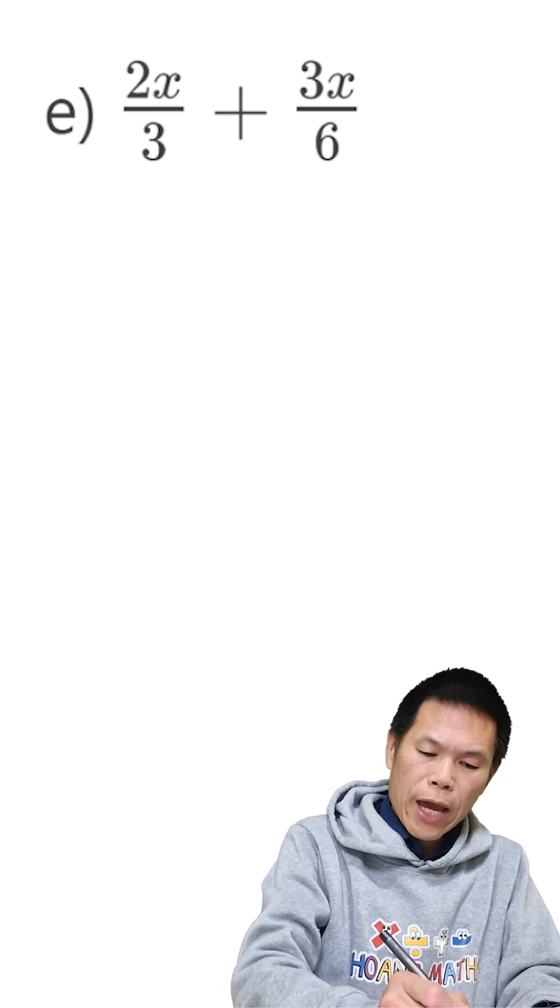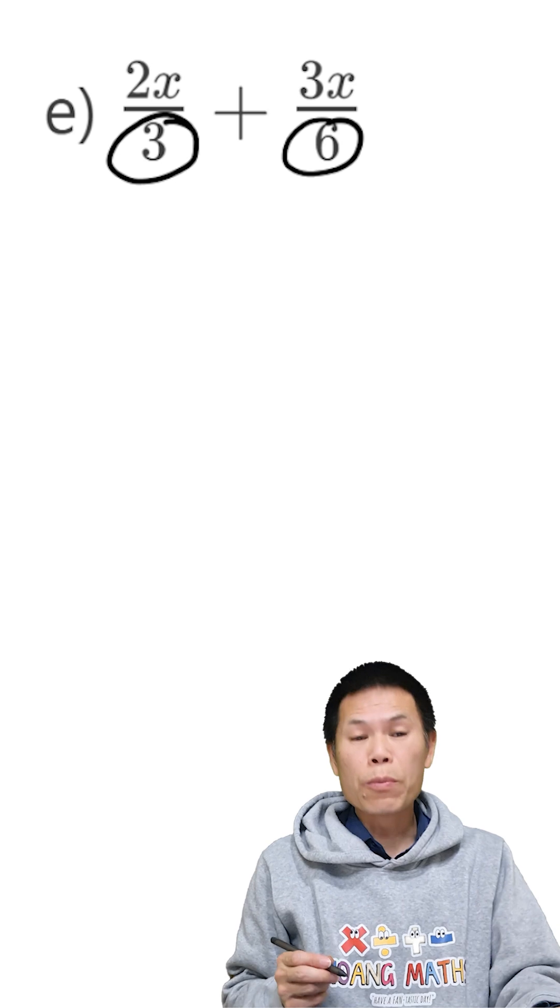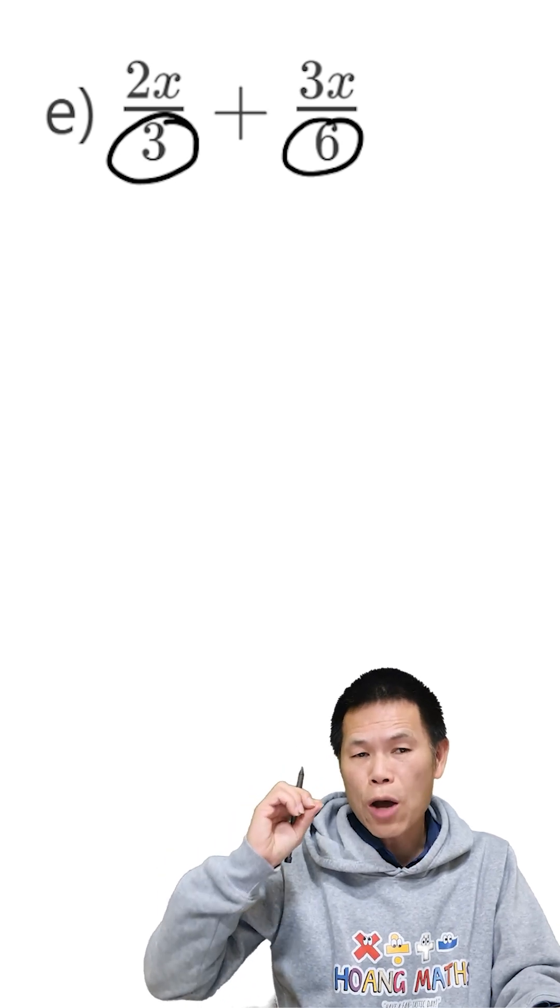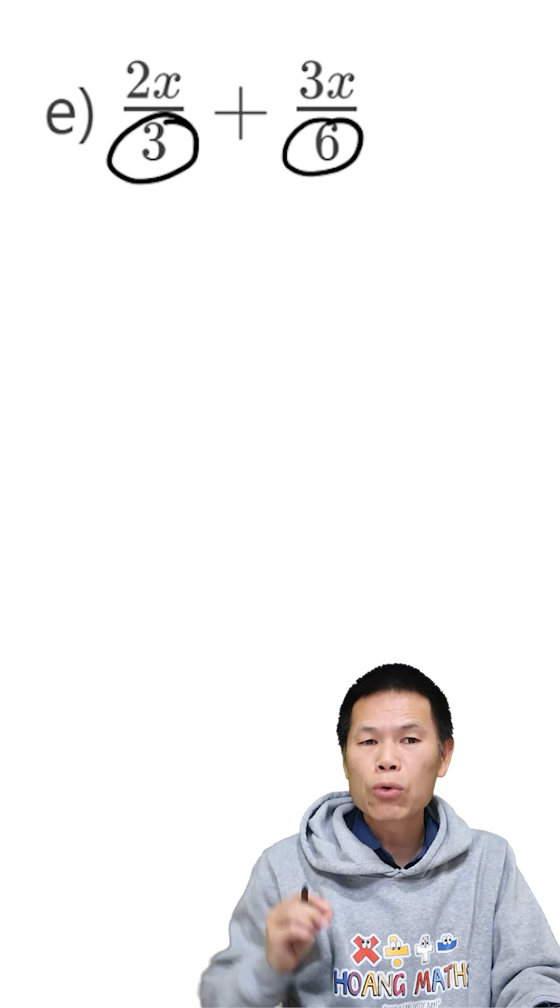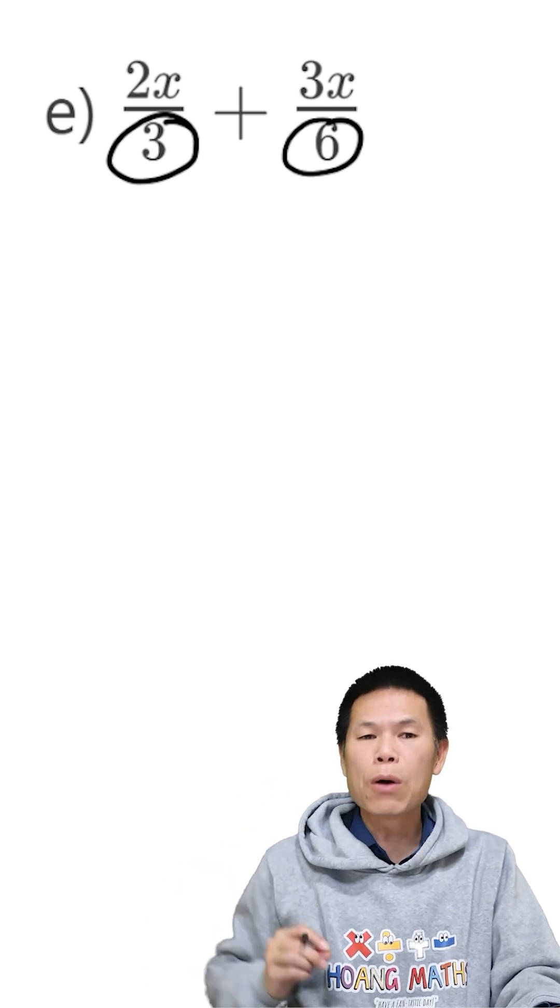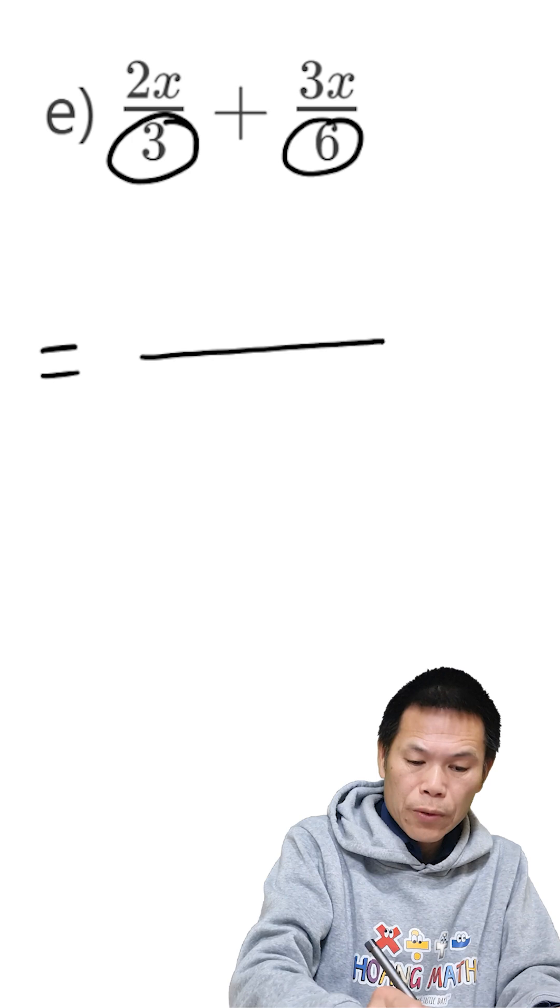Part E, so we have 3 and 6 down the denominator. Therefore, the lowest common denominator is 6, because 6 is a multiple of 6, and 6 is a multiple of 3. So that is equal to 6.